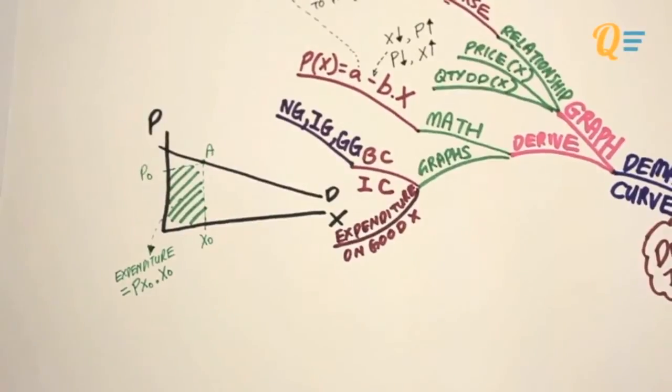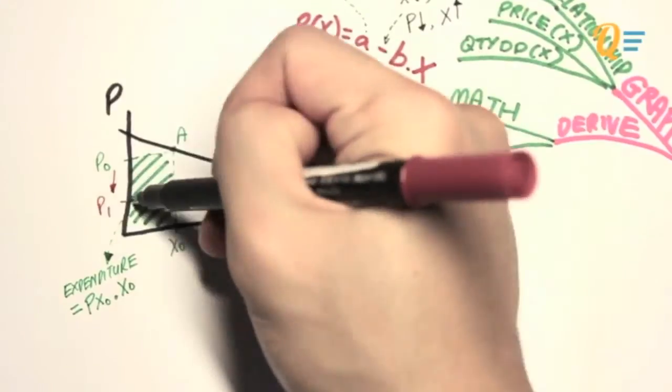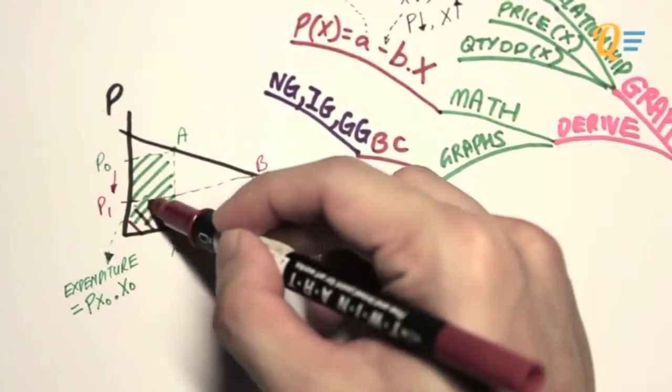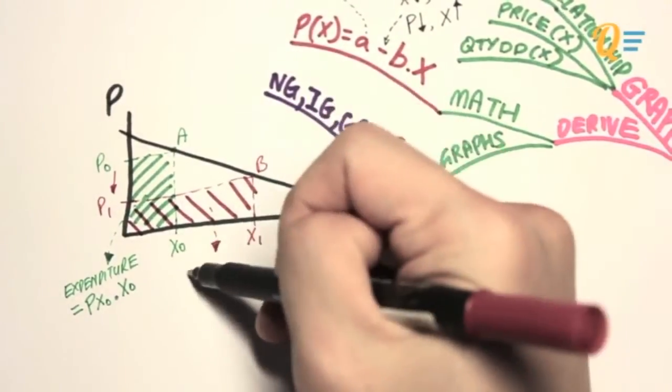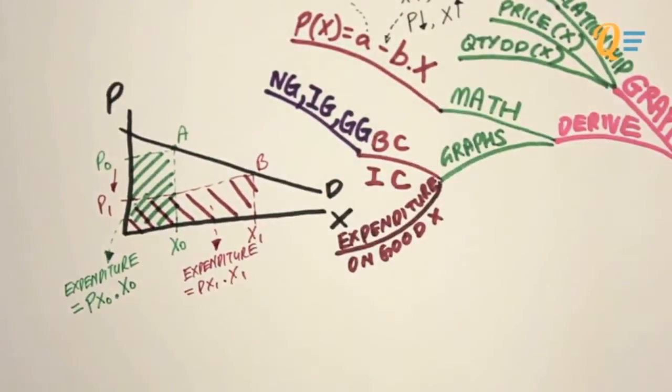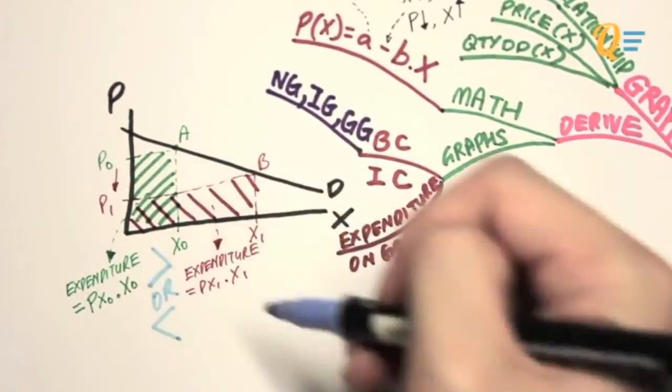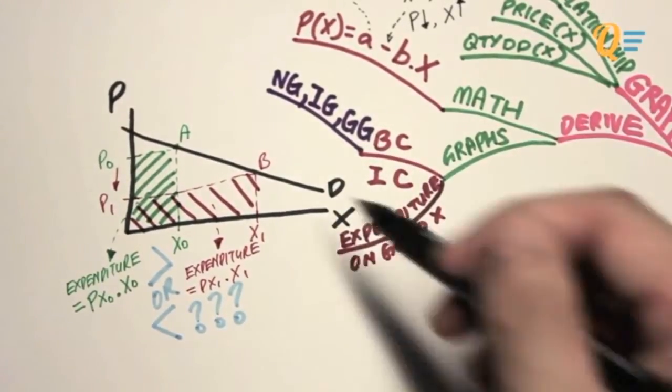So what happens if the price of X falls? Well, obviously the expenditure is going to change. So if the price of X falls to P1, then the quantity demanded for good X will increase to X1. So now the expenditure is this red box over here. So if you're going to take the price of X1 multiplied by X1, you're going to get total expenditure. Therefore the area of this box is the expenditure. Now, has expenditure increased or decreased due to the decrease in price? Well, we've got to find out.